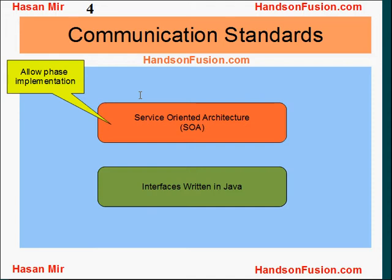Let's say if you're running a legacy system consisting of 10 modules, and you do not want to do a rip-and-replace approach, you can bring in two modules from Oracle Fusion Applications, and these modules can talk to the existing legacy modules using services. Once you're happy with these two modules, you can bring in more modules in the next phase. Also, SOA lets you do a mix-and-match approach.